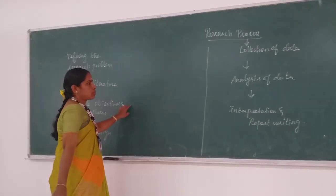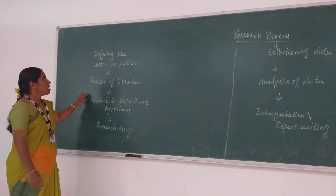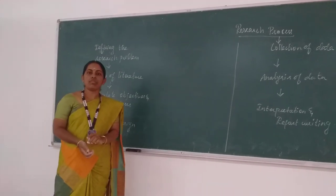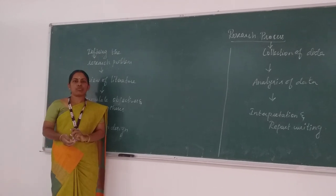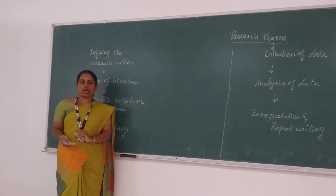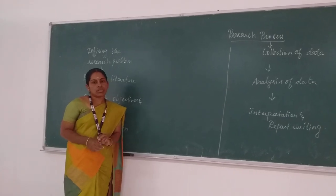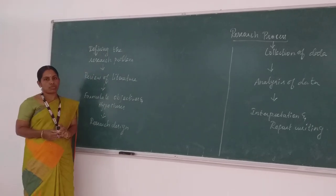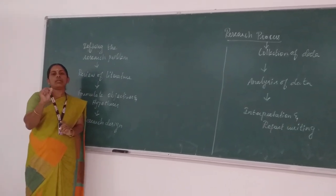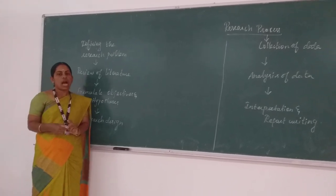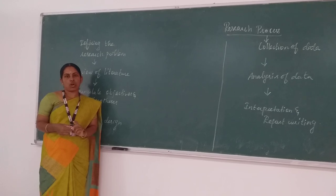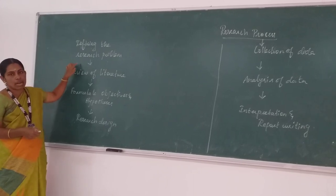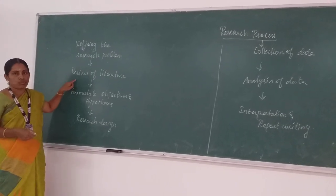Now we discuss all seven stages of the research process. First, defining the research problem. The researcher needs to choose the field of research work. We have four fields: finance, marketing, and general field. The researcher first chooses any one field for their research work. After choosing the research field, they take one particular research problem. After taking that problem, we clearly define and understand the research problem, then move to the next stage: review of literature.